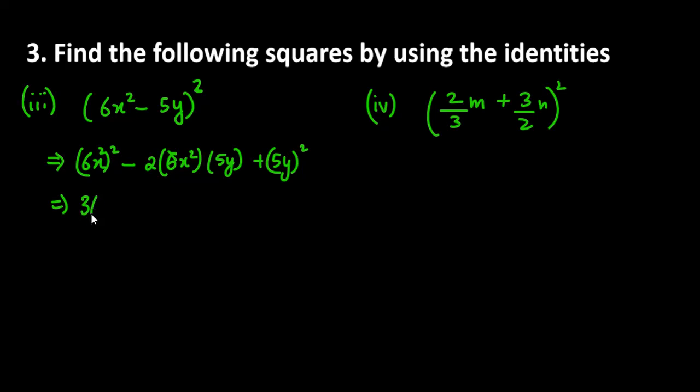Now, 2 into 6 into 5. 2 into 6 is 12, 12 into 5 is 60. 60x square y. And last term is 25y square. So this is the third part.